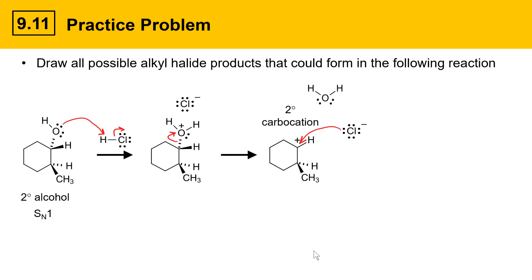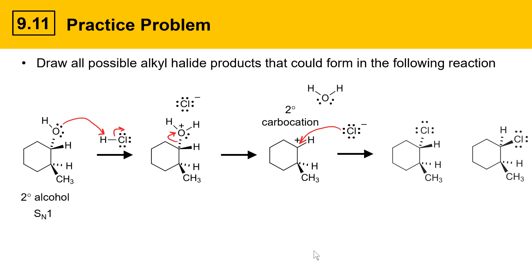The carbocation has two faces — a top face and a back face — and each of those is accessible, leading to two possible alkyl halide products: one in which the chloride is delivered from the back face and one from the front face. In this case, the two stereoisomers formed are a trans product and a cis product, and they're diastereomers of each other.